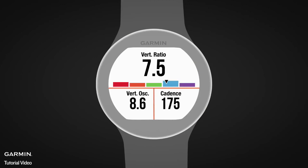The color gauge applies to the top metric. The position of the pointer on the gauge indicates how your value compares to other runners.